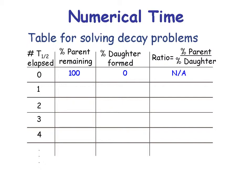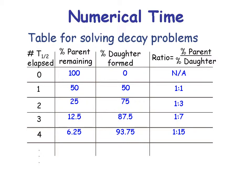Here's a table for solving decay problems. At zero half-lives, you start with 100% parent and no daughter. After one half-life you have 50% parent and 50% daughter — a one-to-one ratio. After the second half-life you have 25% parent and 75% daughter — a one-to-three ratio. After three half-lives you have 12.5% parent, giving a one-to-seven ratio. After four half-lives you have 6.25% parent and a one-to-fifteen ratio. The formula is: sample age equals the number of half-lives times the length of time for one half-life.